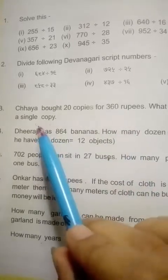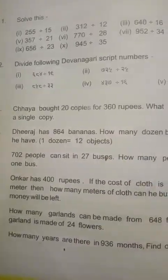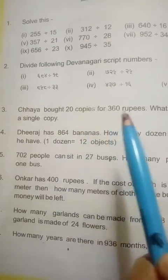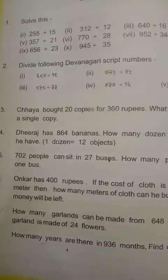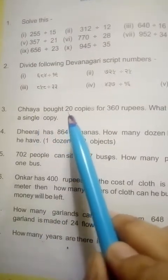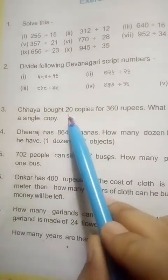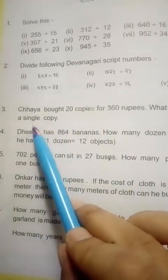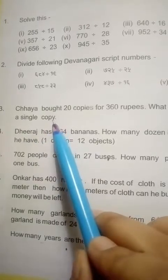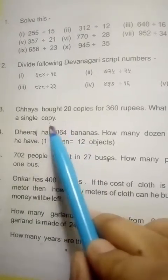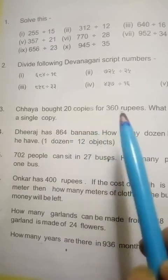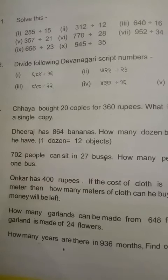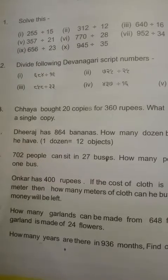When you are asked about only one object's price, in that situation we always use the division rule. Here, you are given the price of 20 copies and asked for a single copy's price, so we solve this question with the help of dividing. Let's start. First, we write the statement according to the question.